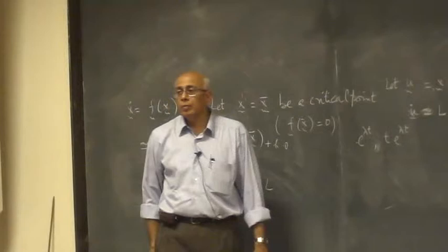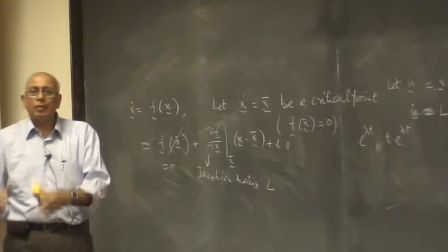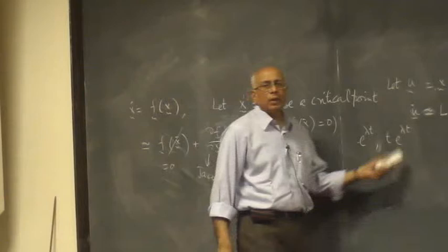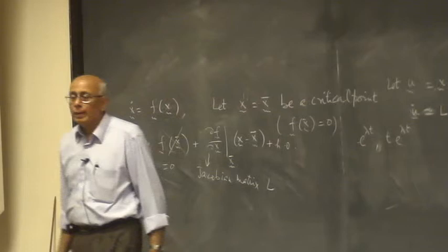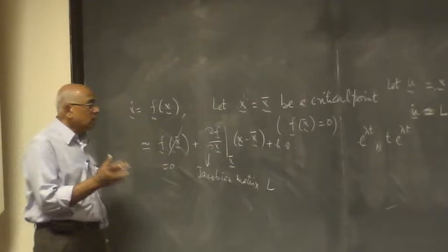e to the lambda t. So if an eigenvalue is repeated some m times, then this will go on: e to the lambda t, t e to the lambda t, till t to the m minus 1 over m minus 1 factorial, e to the lambda t.